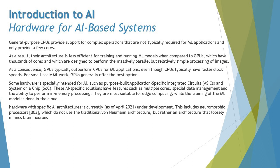GPUs — graphical processing units — have better capabilities for complex parallel operations. They have thousands of cores, designed to perform massively parallel but relatively simple processing of images. As a consequence, GPUs typically outperform CPUs for ML applications. Even though CPUs have faster clock speeds, it does not make sense for small-scale ML work — GPUs generally offer the best option.